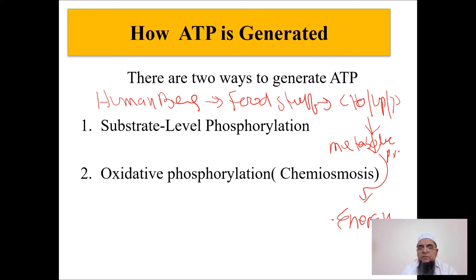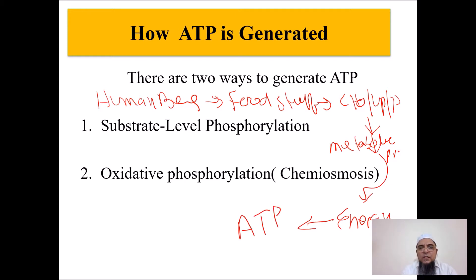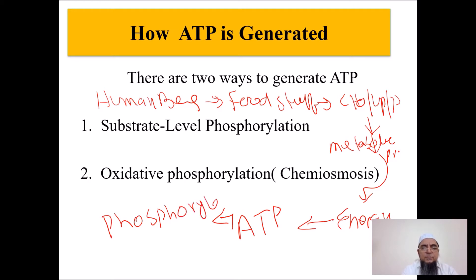This energy is in the form of ATP. The process by which we get this energy is called phosphorylation.